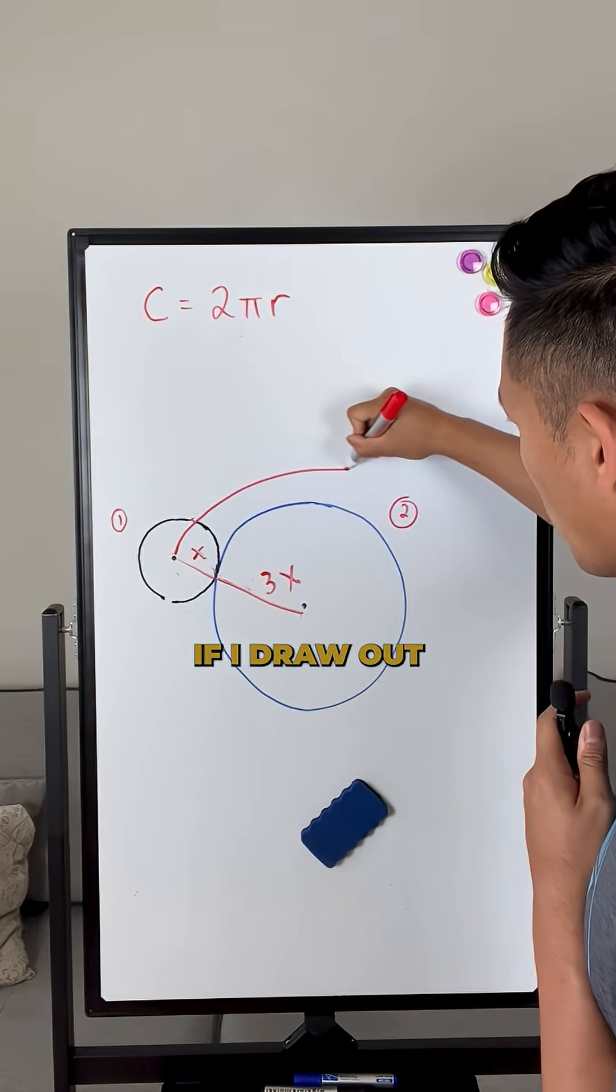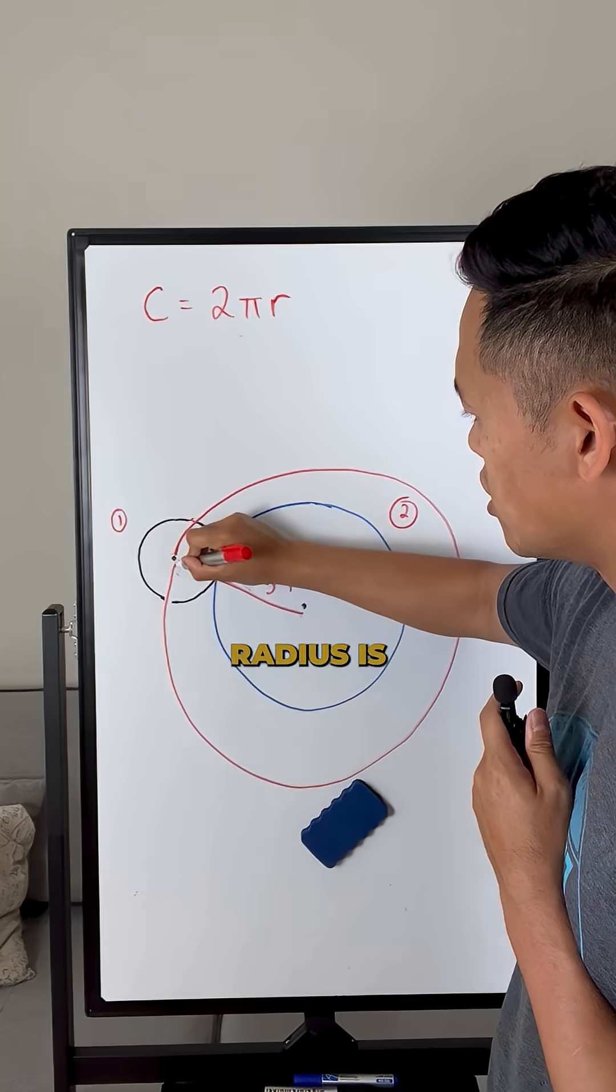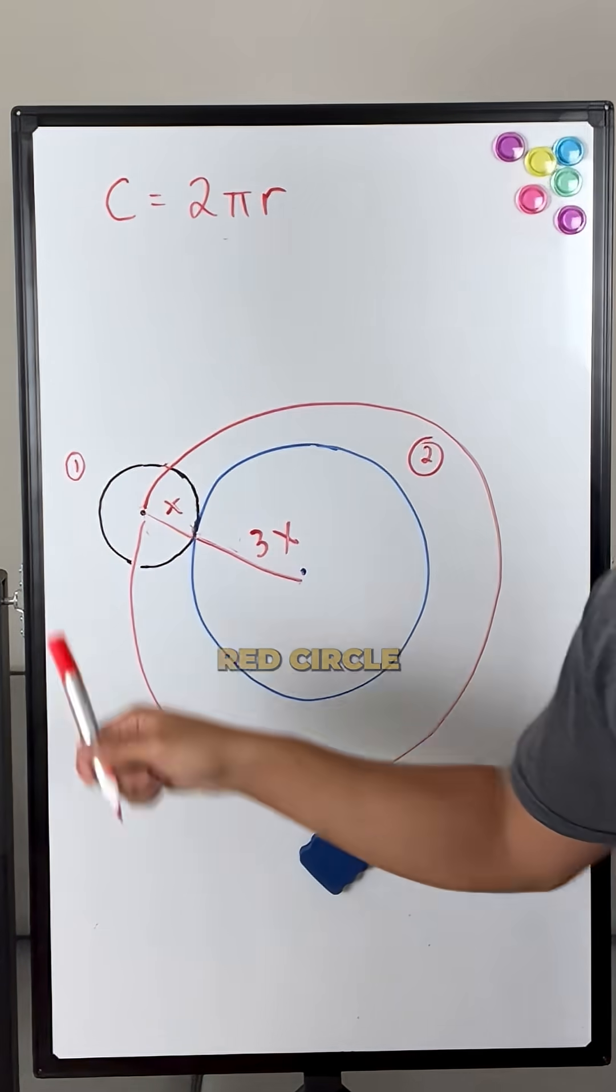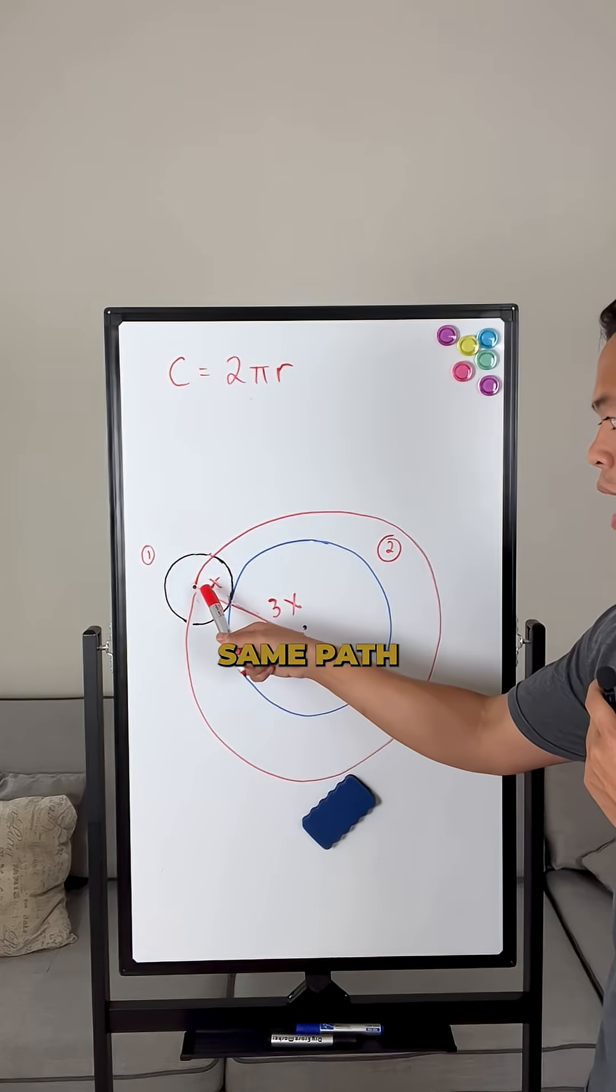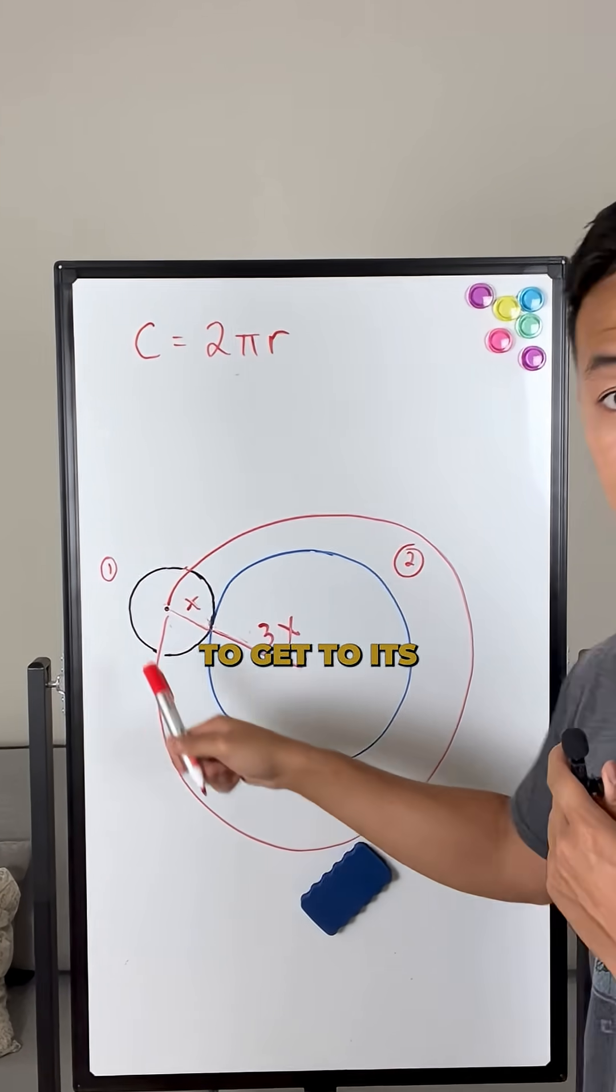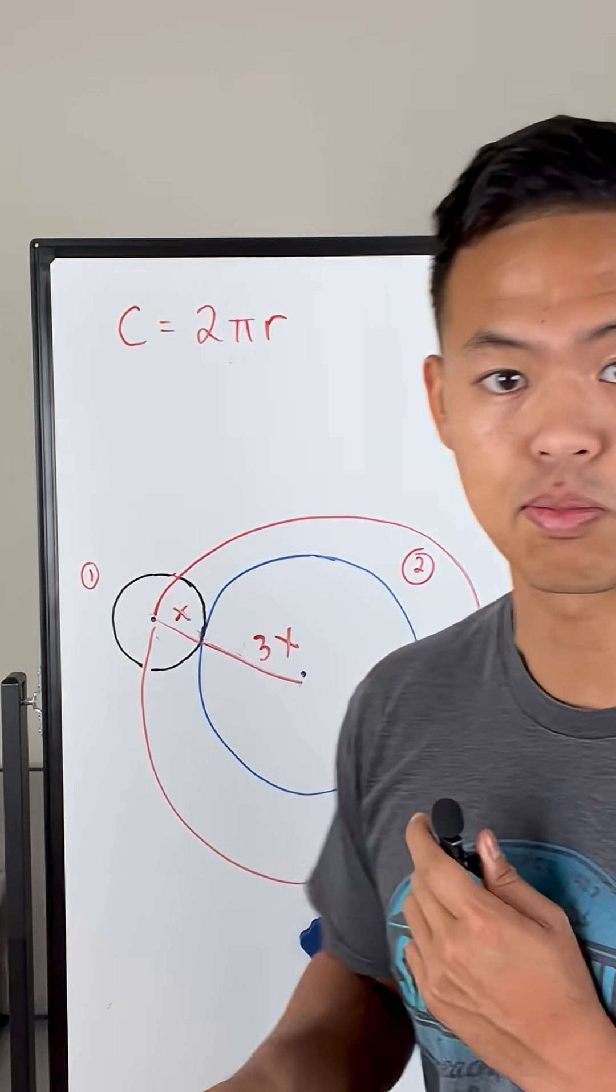If I draw out a circle that combines the two radiuses, the circumference of the new red circle is the same path that the smaller circle needs to travel to get to its original spot, just like how it says in the problem statement.